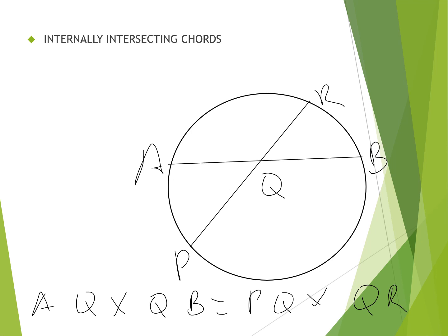Let's look at internally intersecting chords. We have two intersecting chords AB and PR; they intersect at Q. The rule is: AQ multiplied by QB equals PQ multiplied by QR. We start from one point on the circumference to the point of intersection, then from the point of intersection to the other point on the circumference.